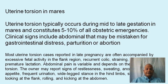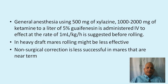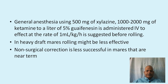Abdominal pain is variable and depends on the extent of torsion. The owner may report signs of restlessness, sweating, abnormal appetite, frequent urination, wide hind leg stance, looking at the flank, rolling, and kicking at the abdomen. In these pictures you can see how the broad ligaments can be located by transrectal palpation to assess the side of the uterine torsion.